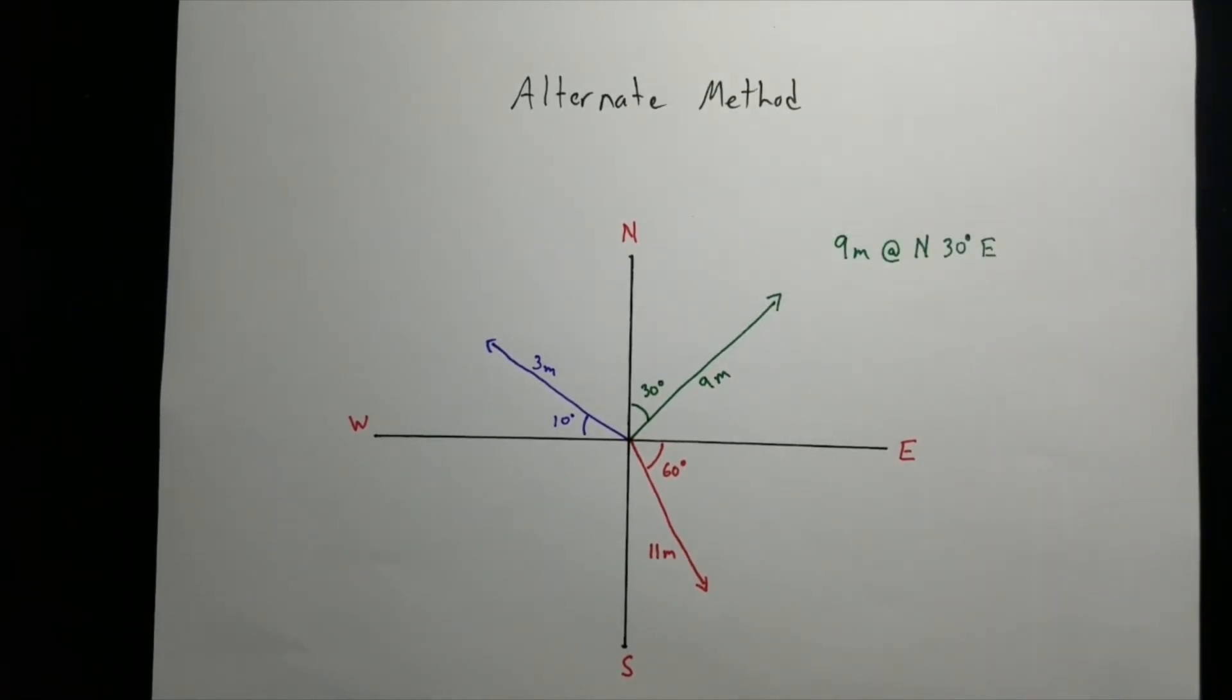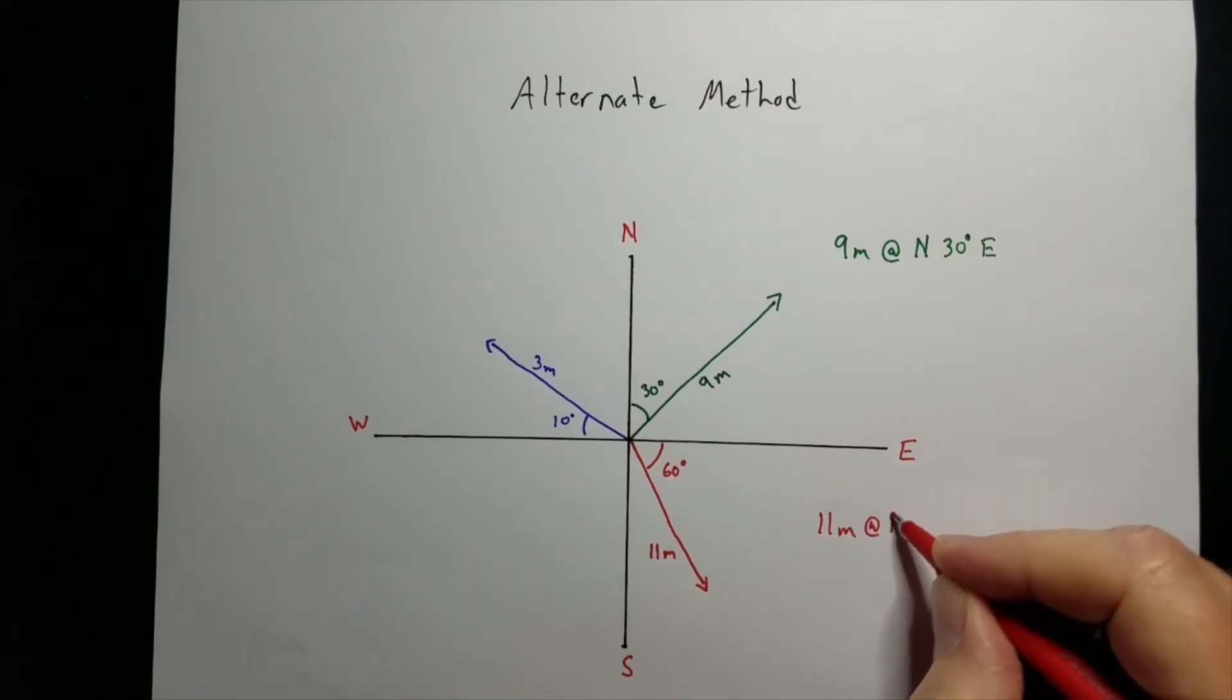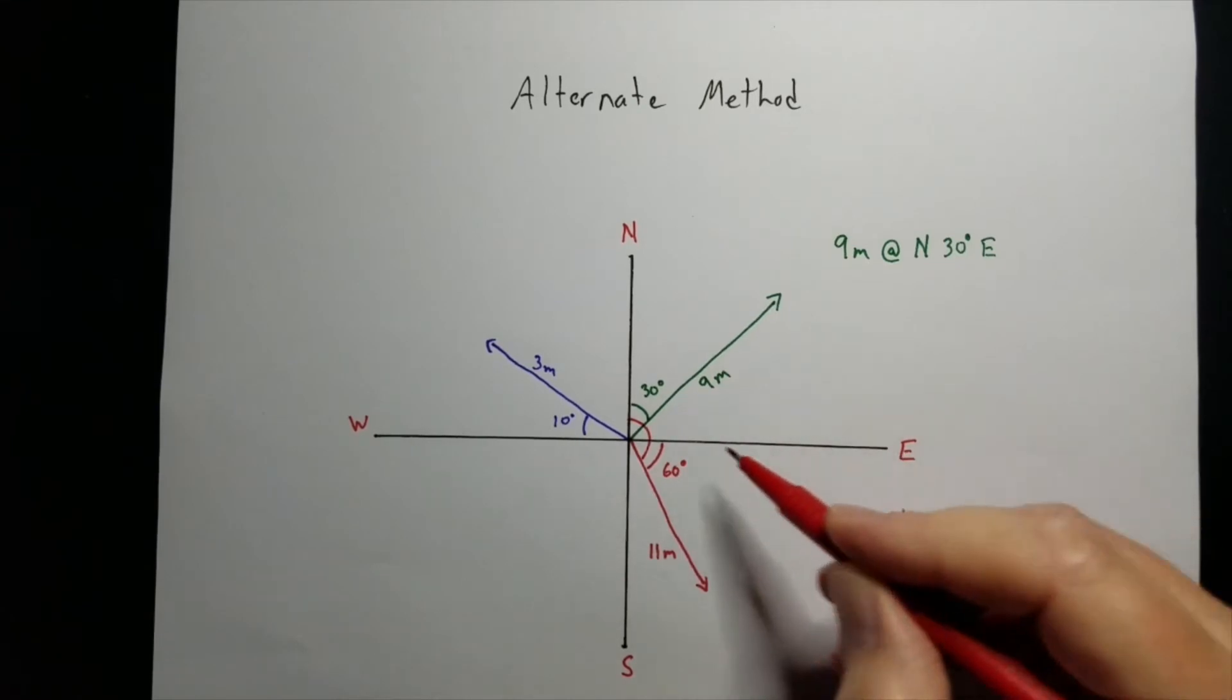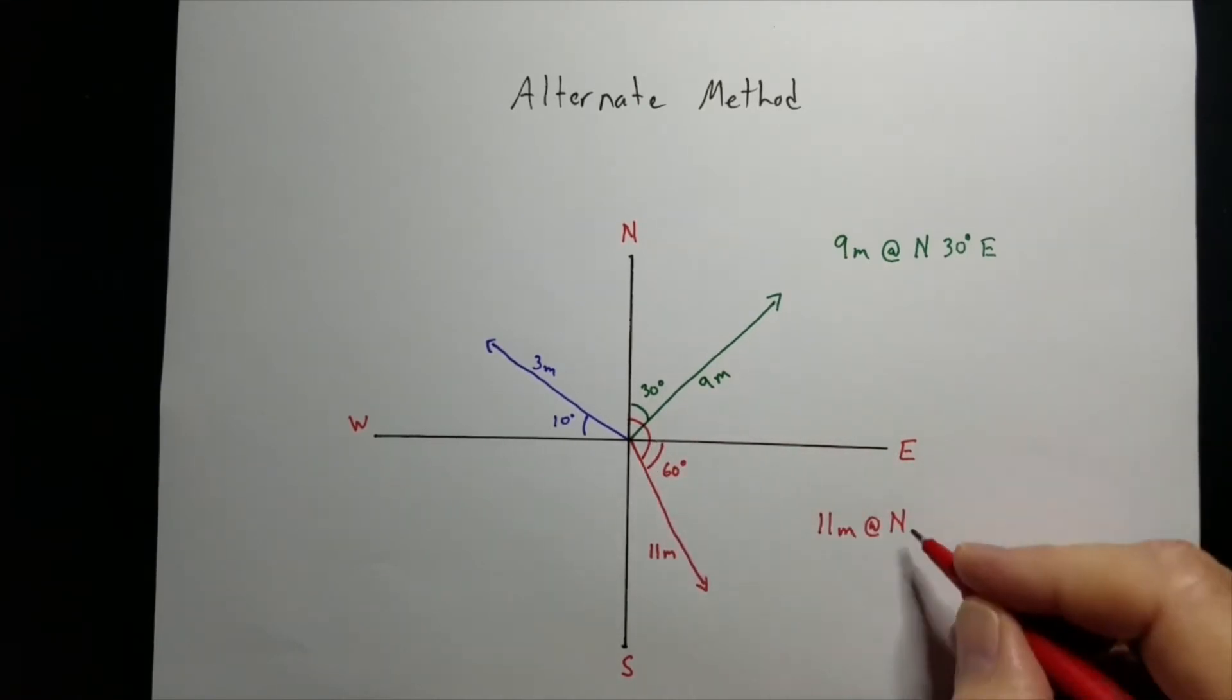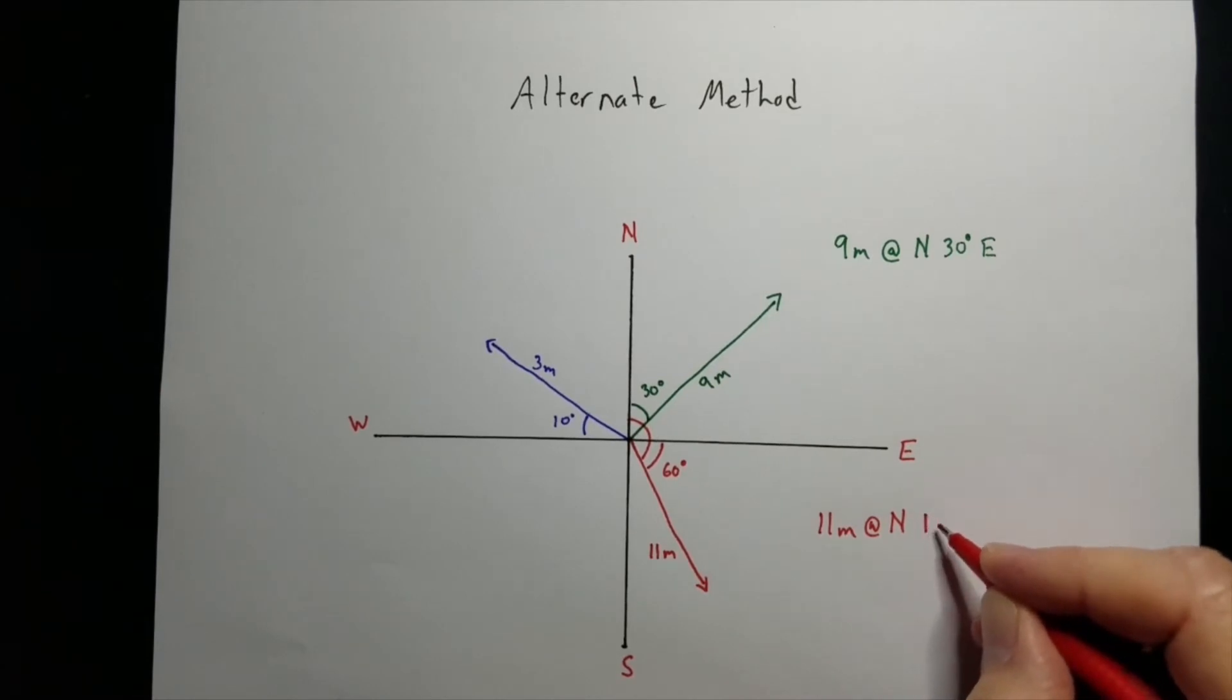If we look at the red one, the red one would be 11 meters at north, but we've got to go from here all the way down to here. So that's 90 plus another 60. So that would be 11 meters north 150 degrees east.